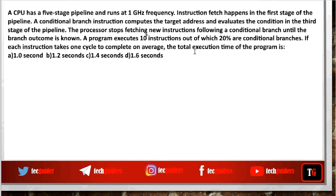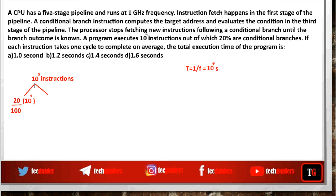We need to find out the execution time of the program. The clock frequency is given, so the clock time period can be found out — the clock frequency is the inverse of time period. So the time period is 1/10^9, which is 10^-9 seconds. There are 10^9 instructions, out of which 20% are conditional branches, meaning the remaining 80% are non-branch instructions.